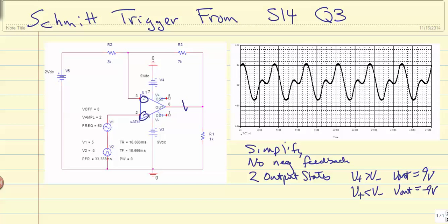V out is here, and then V plus and V minus is where the plus and minus inputs are.